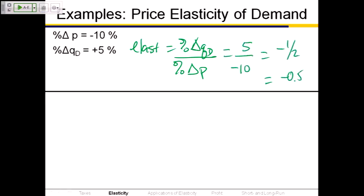Whether you express that as a fraction or decimal is the same difference. Now you do the second one. What's the price elasticity of demand for the second example? The percentage change in price is plus 2, and the percentage change in quantity demanded is minus 4. When the price goes up by 2%, quantity demanded goes down by 4%.